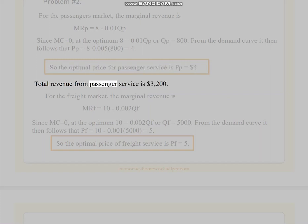Total revenue from passenger service is $3,200. For the freight market, the marginal revenue is MRF = 10 - 0.002 QF. Since MC = 0, at the optimum 10 = 0.002 QF or QF = 5000. From the demand curve it then follows that PF = 10 - 0.001(5000) = 5. So the optimal price of freight service is PF = $5.